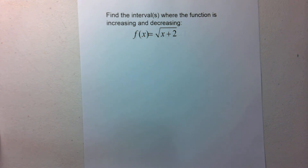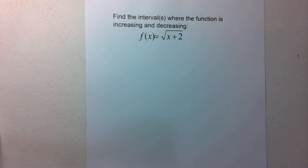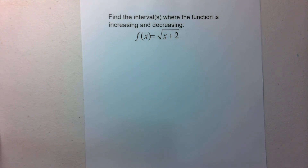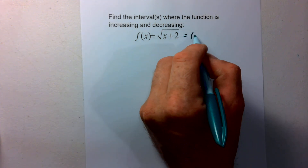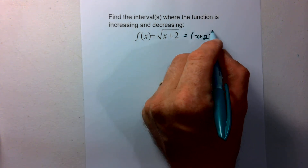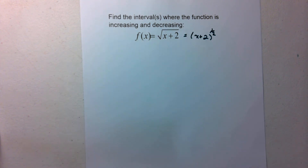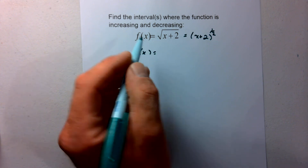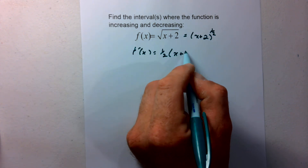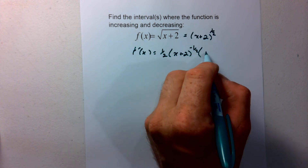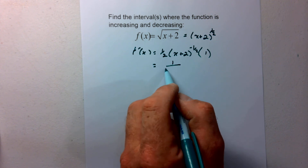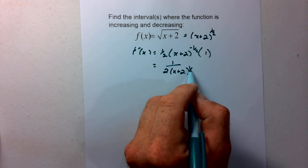Let's skip ahead to some radicals. For the function √(x+2), we can rewrite it as (x+2) to the one half power — changing from a radical to a fractional exponent. Using the chain rule, the first derivative is one half times (x+2) to the negative one half, times the derivative of the inside which is 1. Cleaning this up, we get 1 over 2 times (x+2) to the one half.